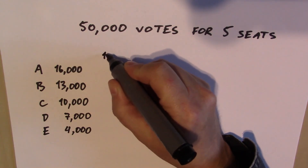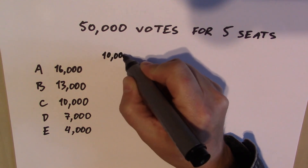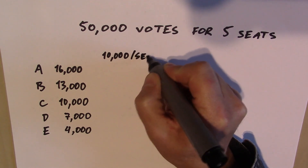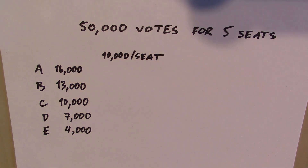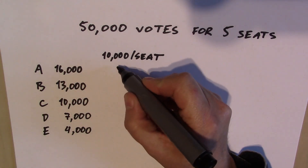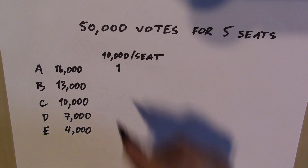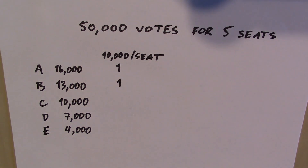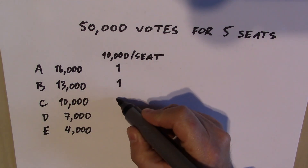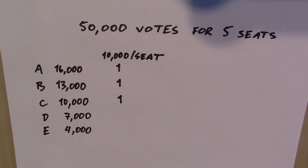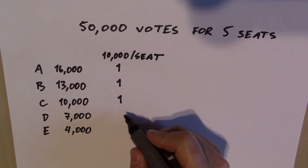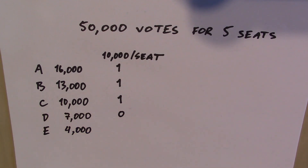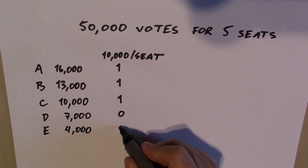Let's say the price of a seat is 10,000 votes, and we have these results: Party A has 16,000 votes, B has 13,000, C has 10,000, D has 7,000, E has 4,000. If the price of a seat is 10,000 votes, then Party A gets one seat with 6,000 votes left over. Party B gets one seat with 3,000 left over. Party C gets one seat. Party D with only 7,000 votes doesn't have enough for a seat, and Party E even fewer — they don't get a seat either.